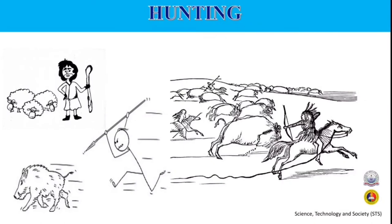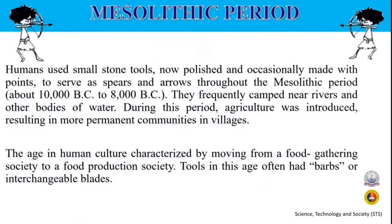In the Mesolithic period, humans used small stone tools, now polished and occasionally made with points, to serve as spears and arrows, spanning about 10,000 BCE to 8,000 BCE. They frequently camped near rivers and other bodies of water. During this period, agriculture was introduced, resulting in more permanent communities in villages. It was an age characterized by moving from a food-gathering society to a food-production society. Tools often had barbs or interchangeable blades.